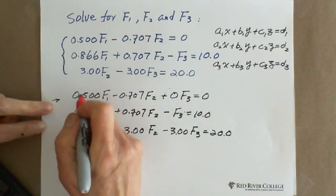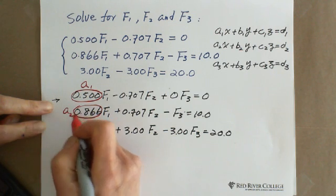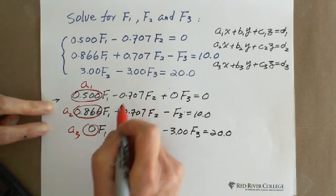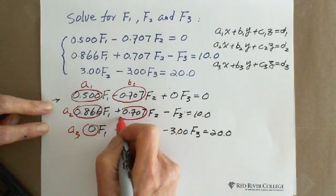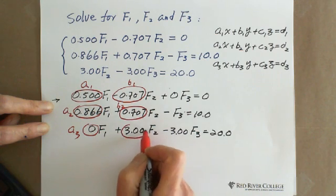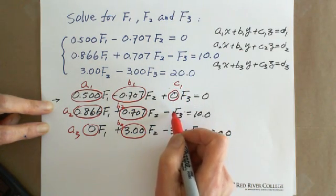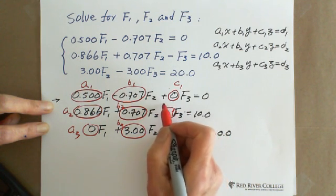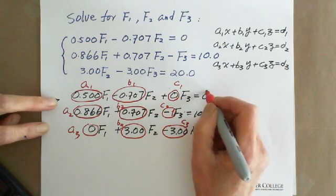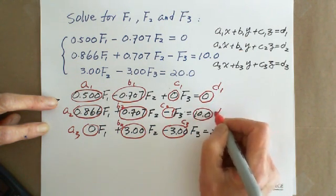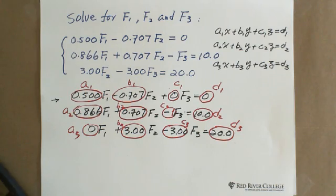Now this one is A1, this one is A2, this one is A3. And then the negative 0.707 is B1, this positive is B2, this one is B3. And this one is C1, the negative 1 is C2, the negative 3.00 is C3. And this is D1, this is D2, this is D3. It's better to label it.